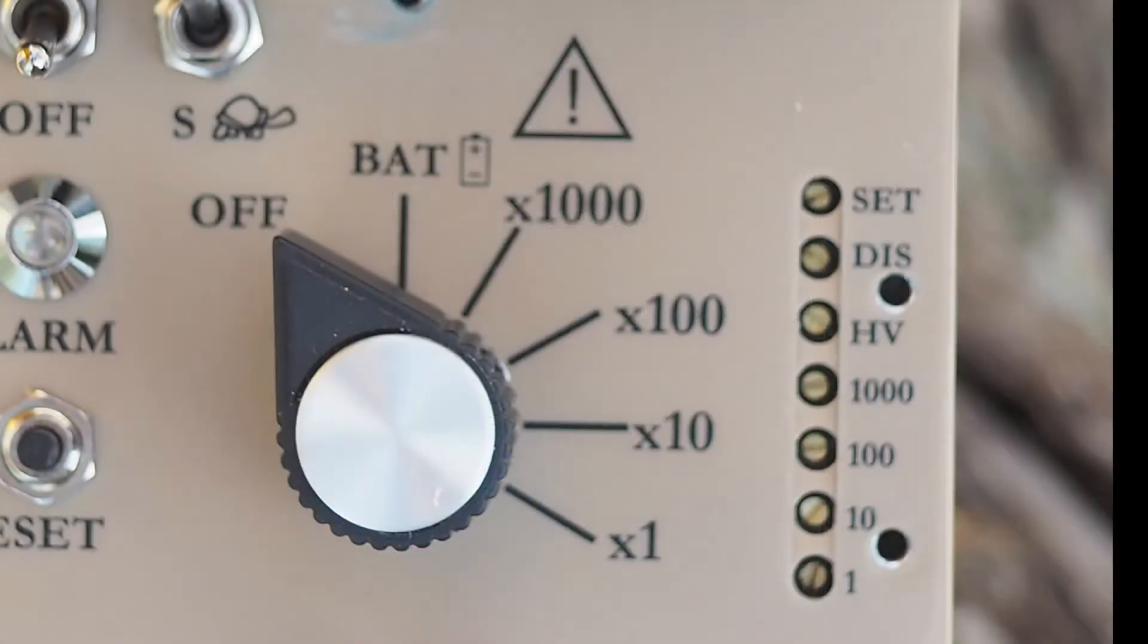The range selector switch is a 6-position rotary switch labeled OFF, BAT, x1000, x100, x10, and x1.